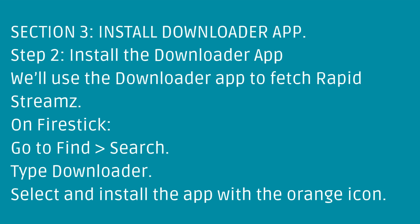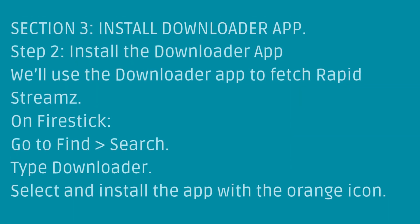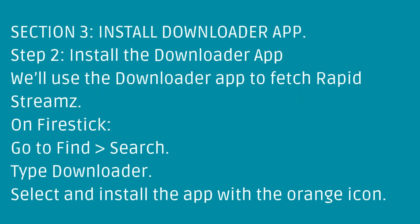Section 3: Install the Downloader App. We'll use the Downloader App to fetch RapidStreams. On Firestick, go to Find, then Search, type Downloader, and select and install the app with the orange icon.